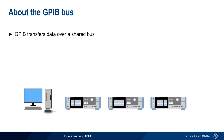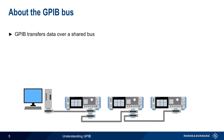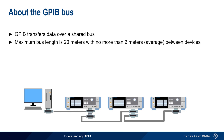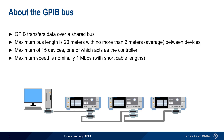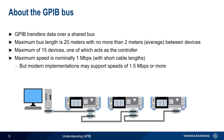GPIB transfers data over a shared bus with a maximum length of 20 meters and no more than 2 meters on average between devices. Up to 15 devices can be on a single GPIB bus, one of which acts as the controller. The maximum transfer speed on a GPIB bus is nominally 1 megabit per second, but modern implementations can sometimes support higher speeds. However, maximum data transfer is limited by the slowest listener on the bus.